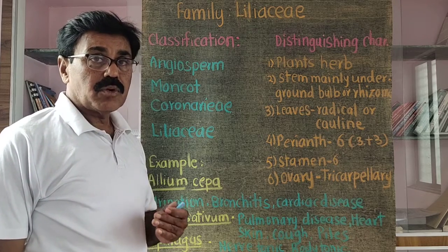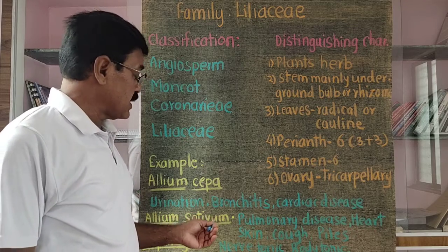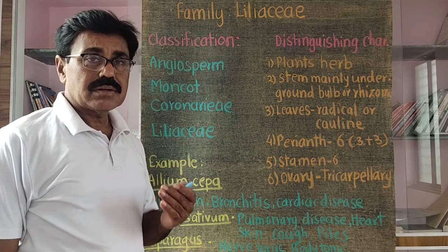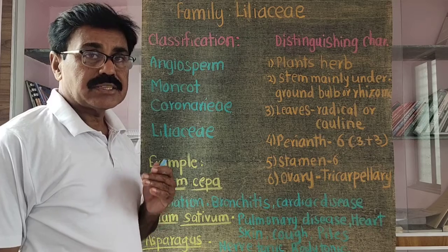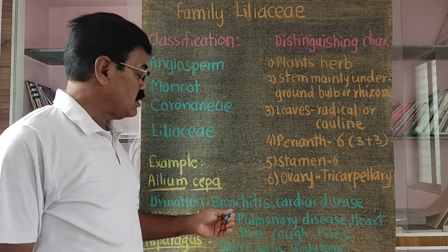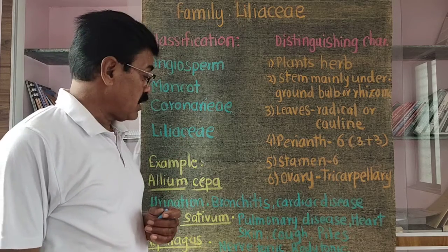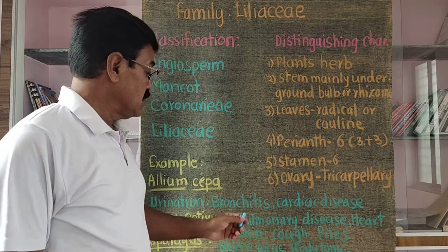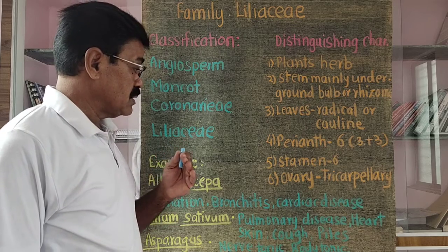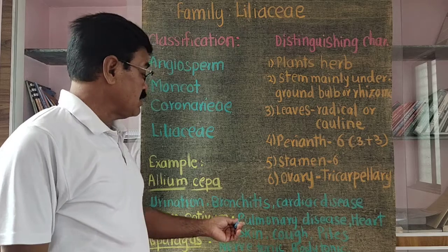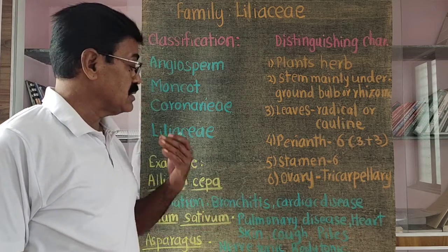The second important plant is Allium sativum — garlic, vernacularly called lasun. This plant is commonly cultivated as a condiment or spice used in food preparations. Medicinally, Allium sativum is used for heart diseases, pulmonary diseases, skin diseases, cough, and piles. It contains a number of medicinal values.